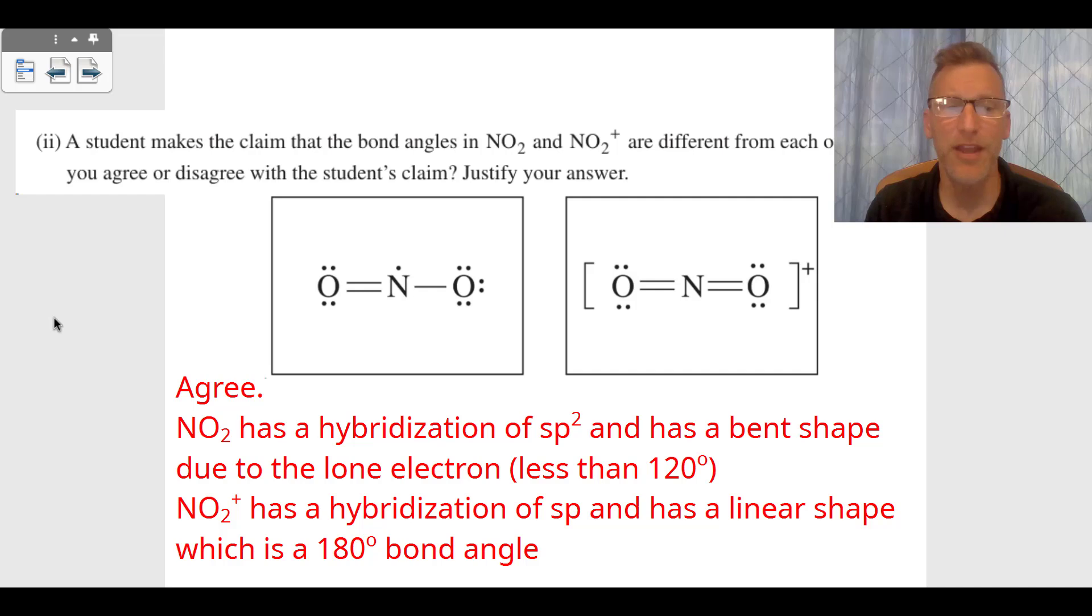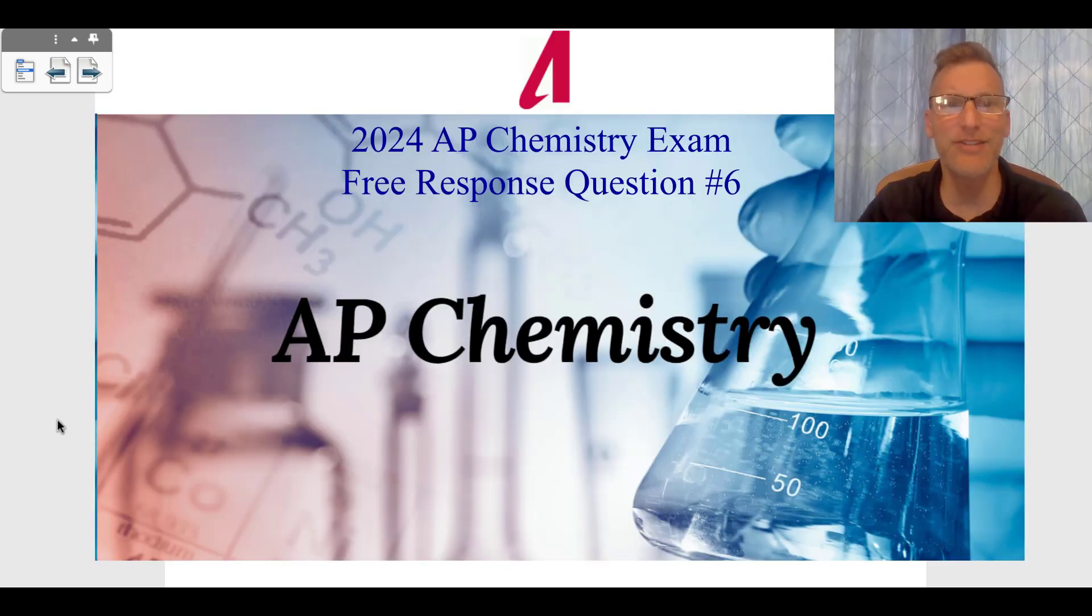But the NO₂⁺ is linear. It's got a hybridization of sp, which is a bond angle of 180 degrees. The bond angles are different, so we agree with the student. That is the 2024 AP Chemistry Exam free response question number six.